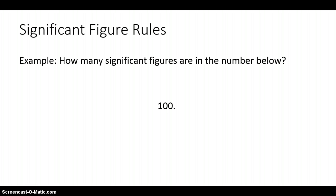How about this number? If you noticed there is a decimal point after the last zero, then all three digits — one, zero, zero — are all significant figures. This is based on rule number four.